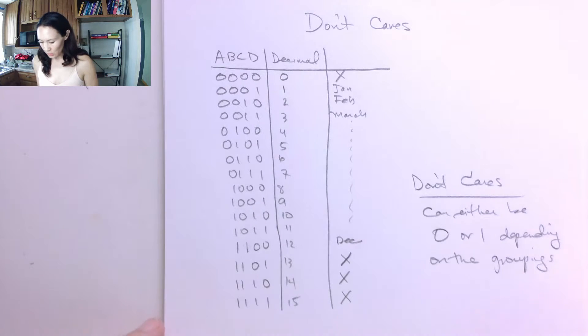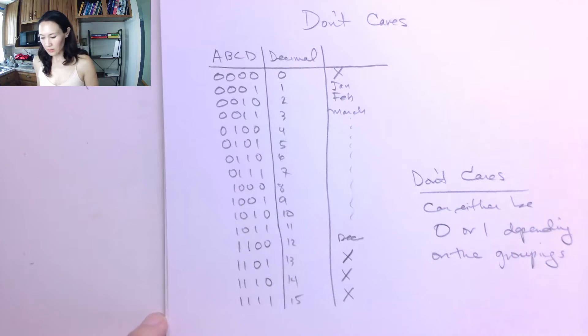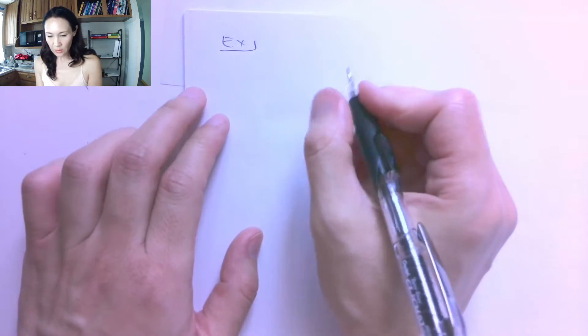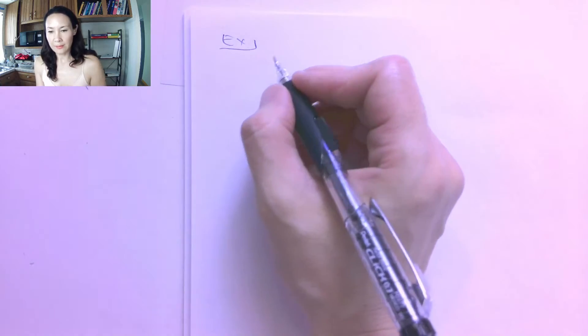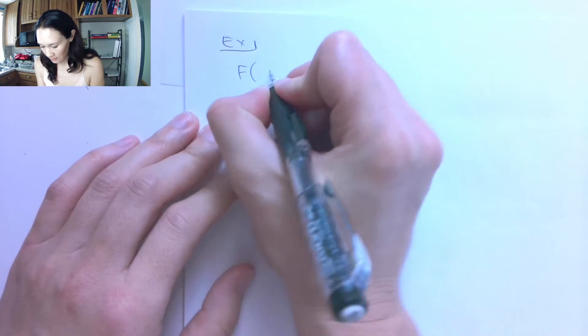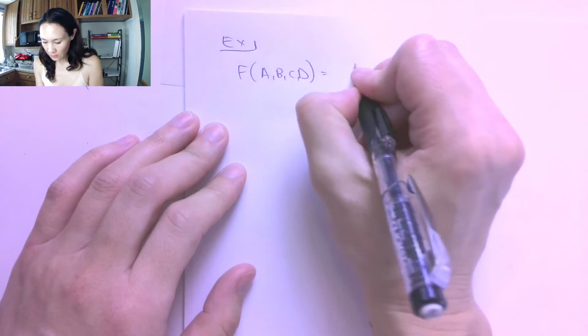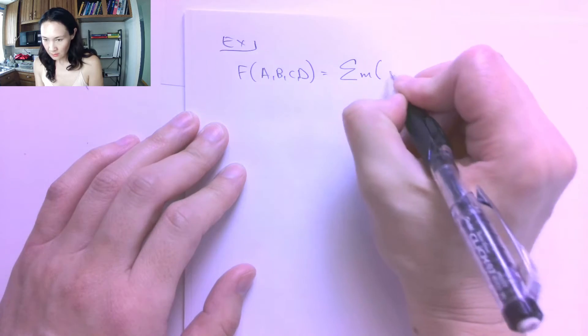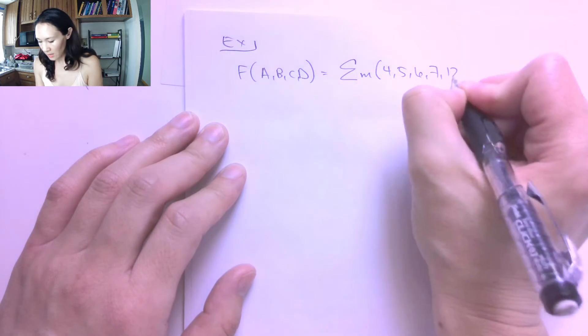So let me show you an example of how we can use don't cares to do a simplification like this and how you put them on the Karnaugh map. Here's an example. Suppose we want to simplify a function. Let's say our function has inputs A, B, C, D, and it's given to us as a sum of minterms 4, 5, 6, 7, and 12.